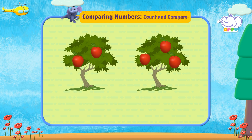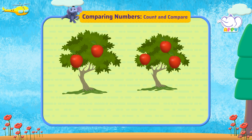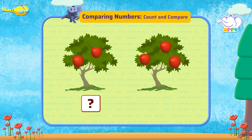More or less. Look at this picture — which tree has more apples and which tree has less? Let's count and compare. Let's count the number of apples on this tree. One, two. We have two apples. Now let's count the number of apples on the other tree.